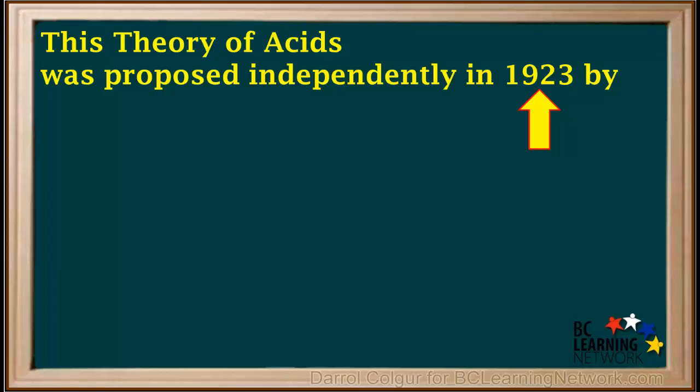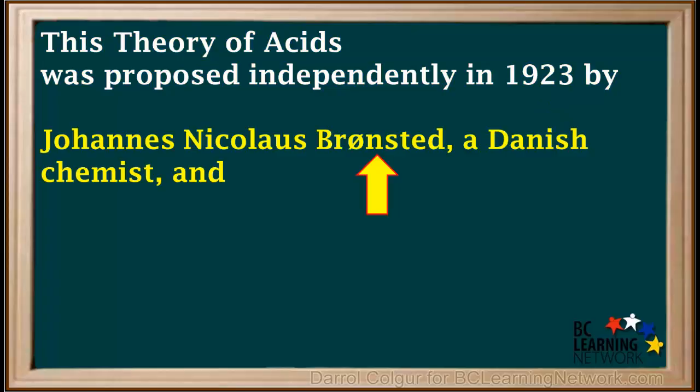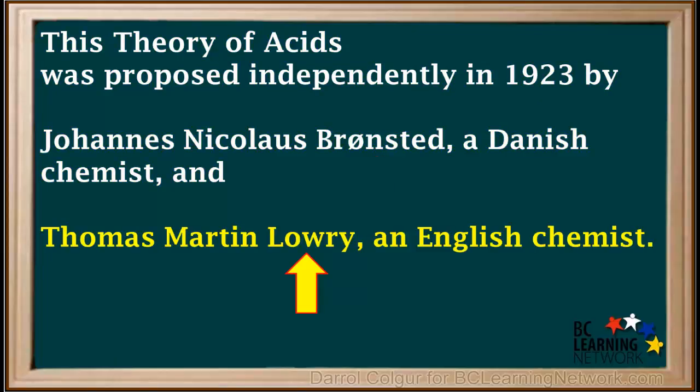This theory of acids was proposed independently in 1923 by two people: Johann Nicholas Bronsted, a Danish chemist, and Thomas Martin Lowry, an English chemist. We'll introduce the main points of this theory.